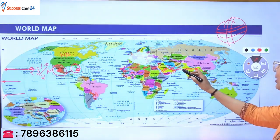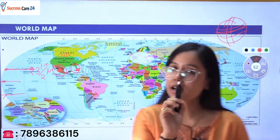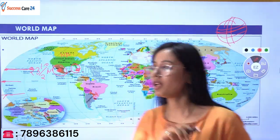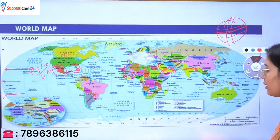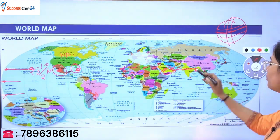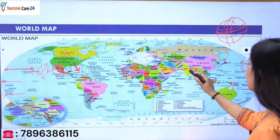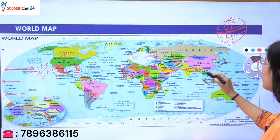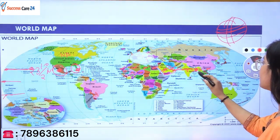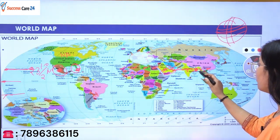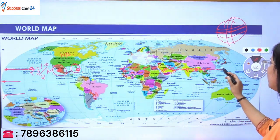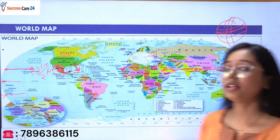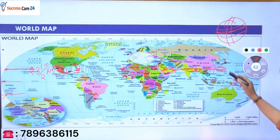Coming back to the Tropic of Cancer: it passes through eight Indian states — you can give us the answer in the comment section. Then from India it goes to Bangladesh, then Myanmar, then China, and it is also Taiwan — the Tropic of Cancer passes through Taiwan as well.